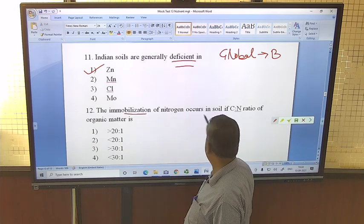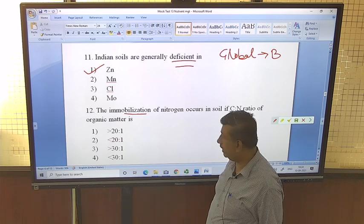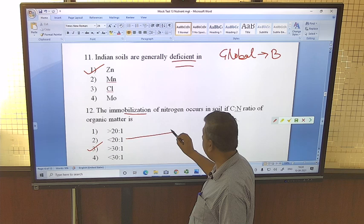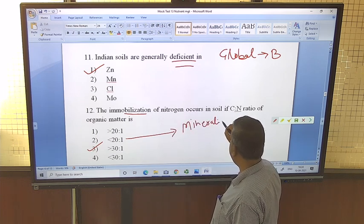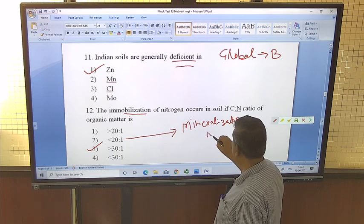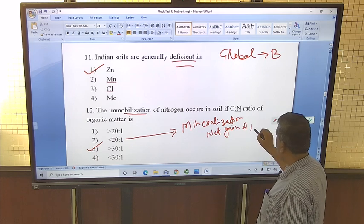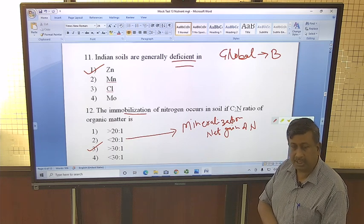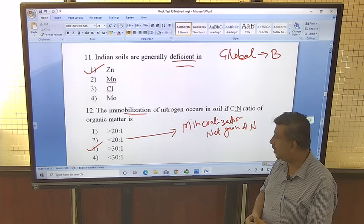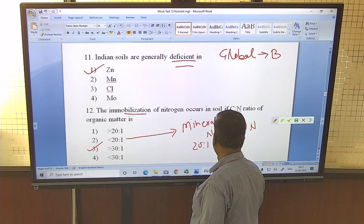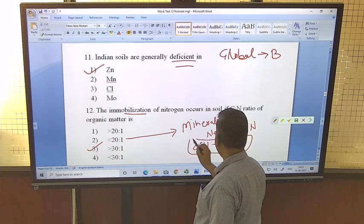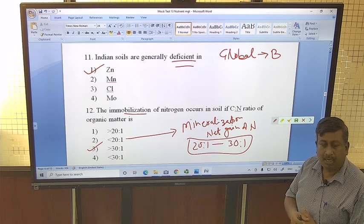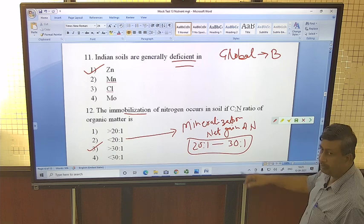The immobilization of nitrogen occurs while its C:N ratio of organic matter is more than 30:1. If it is less than 20:1, then mineralization is there, means net gain of nitrogen. This is a process of mineralization and immobilization. And if it is more than 30:1, then immobilization and there is temporary deficiency of nitrogen in soil. And if it is between 20:1 to 30:1, then net gain is 0. It is in dynamics such that mineralization amount equals immobilized amount. Net gain is 0 if ratio is between 20:1 to 30:1.